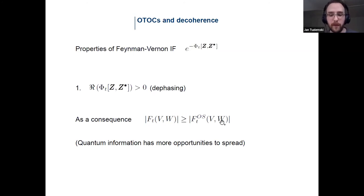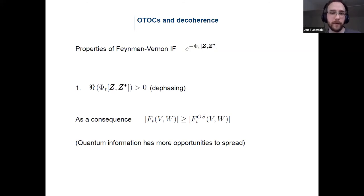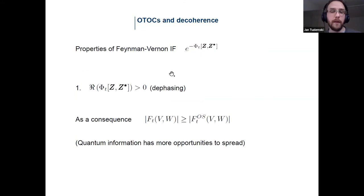A smaller modulus of an OTOC means that scrambling is more profound in the system. This consequence is relatively easy to understand: if scrambling is about spread of quantum information over different degrees of freedom of your system, coupling it to some external environment gives quantum information more opportunities to spread because there are simply more degrees of freedom. This inequality reflects that fact. You can also ask what is the most destructive way in which decoherence can affect a measurement of your OTOC.